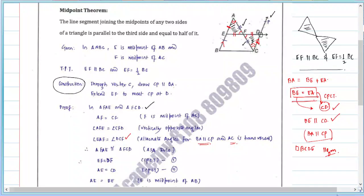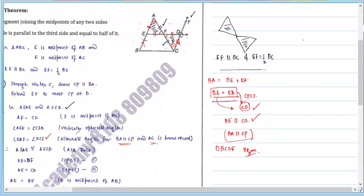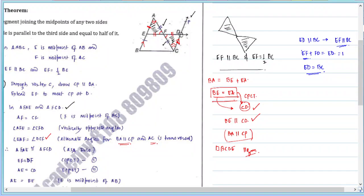Since BCDE is a parallelogram, ED is parallel to BC — so EF is parallel to BC, which proves the first part of the Midpoint Theorem. For the second part: EF plus FD equals ED, and ED equals BC (opposite sides of parallelogram). Since EF equals DF from CPCT, we get 2 times EF equals BC, so EF equals half of BC.